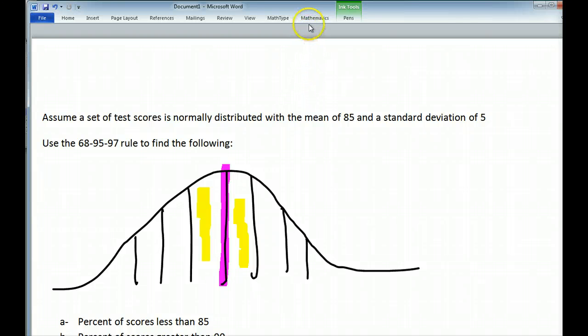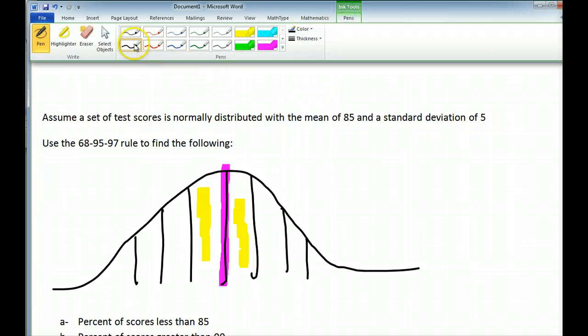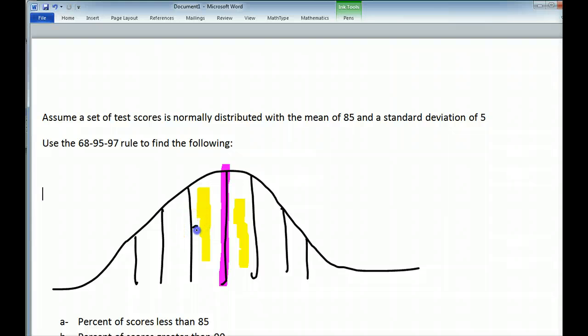Now since the bell curve is symmetrical, we know this means that 34% falls to the left and 34% falls to the right, 68 divided by 2.